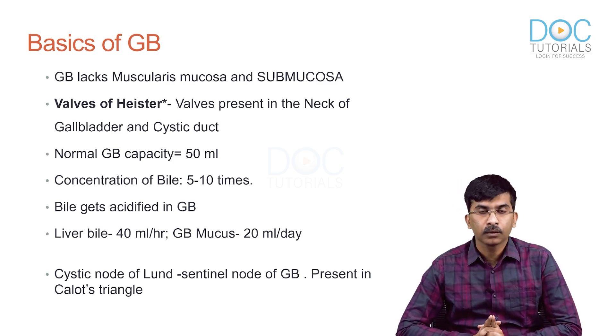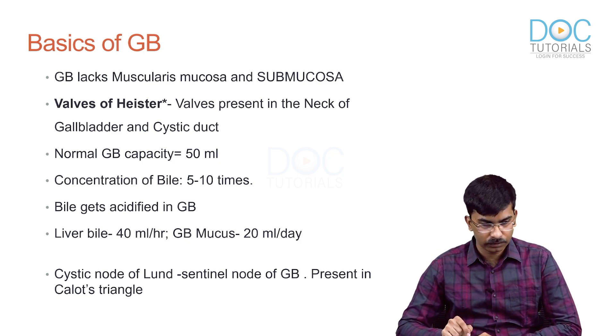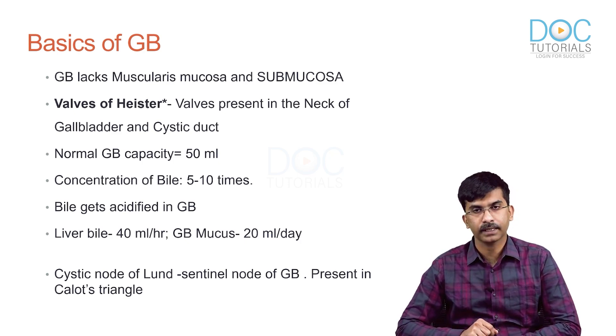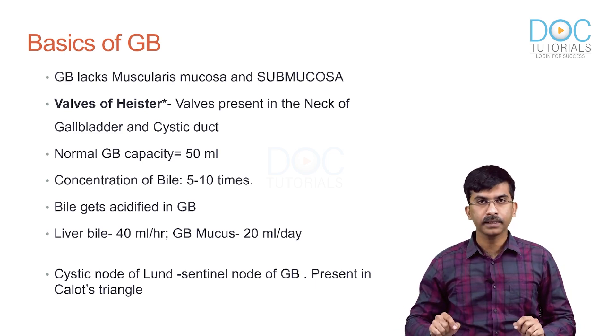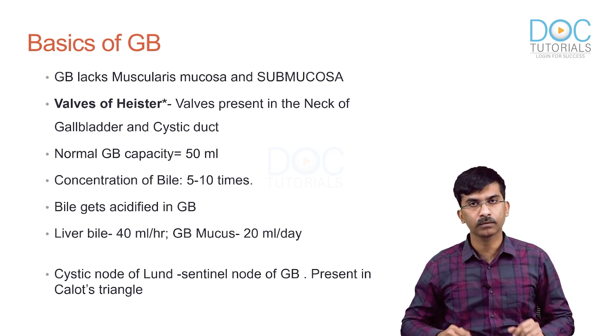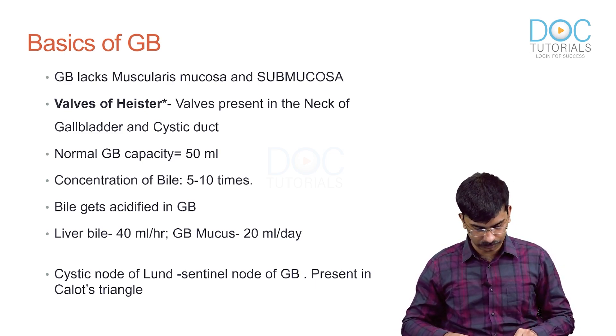There is a sentinel node for the gallbladder called the cystic node of Lund. It is present in the Calot's triangle. So, the cystic node of Lund is the sentinel node of the gallbladder, present in the Calot's triangle.